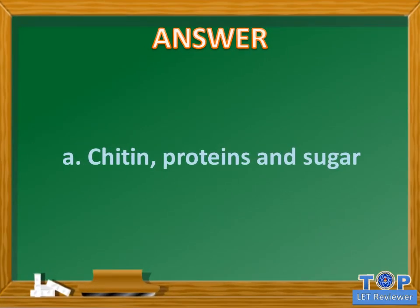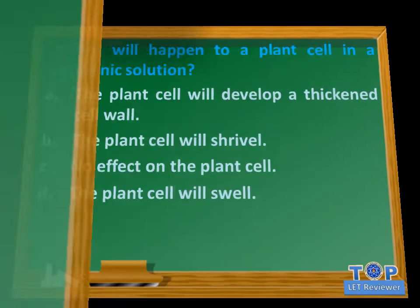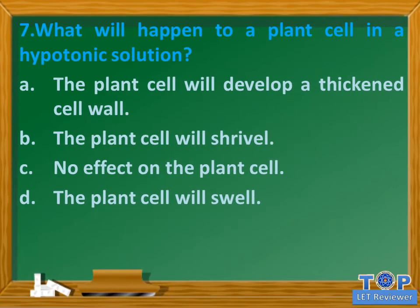Answer: A. Chitin, proteins and sugars. Question number 7. What will happen to a plant cell in a hypotonic solution? A. The plant cell will develop a thickened cell wall. B. The plant cell will shrivel. C. No effect on the plant cell. D. The plant cell will swell.